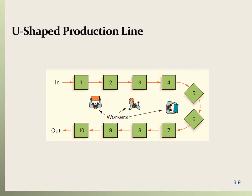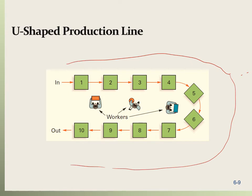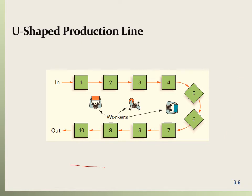Another version of the assembly line is the U-shaped layout. If a facility has limited space for a long straight line, the line can be bent into a U-shape — instead of continuing forward, it curves back to the left, saving space horizontally.